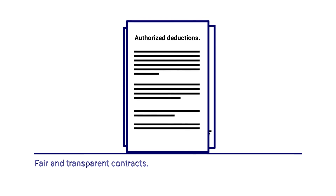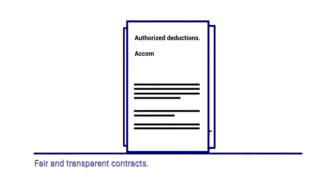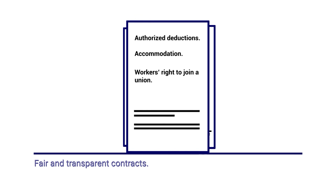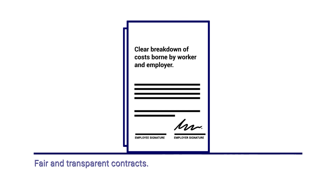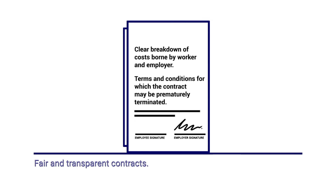The contract should also include authorised deductions in accordance with the Employment Act and other applicable laws and regulations, accommodation details including any applicable costs, no prohibition on the workers' rights to join a union, organise or engage in collective bargaining subject to applicable laws and regulations, a clear breakdown of costs to be borne by the worker and by the employer such as costs for travel, medical, travel documentation and other associated items, and terms and conditions for which the contract may be prematurely terminated.